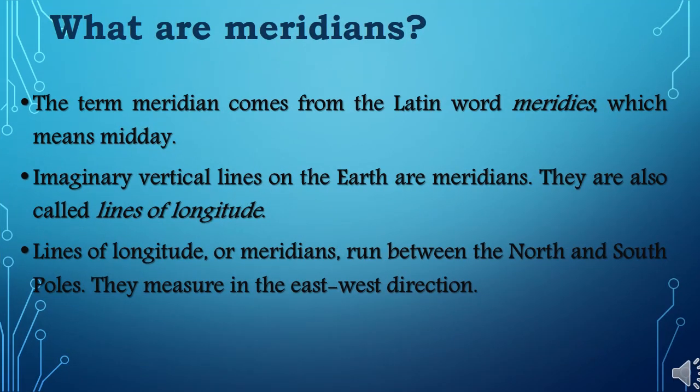What are meridians? The term meridian comes from the Latin word meridies which means midday. Imaginary vertical lines on the earth are meridians. They are also called lines of longitude.